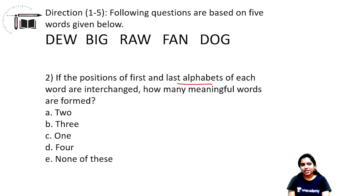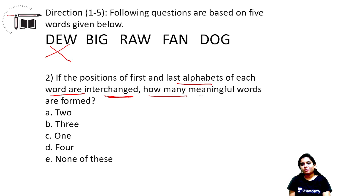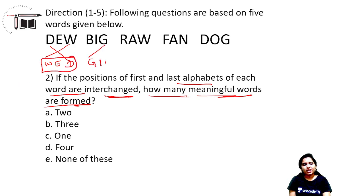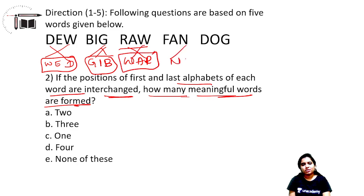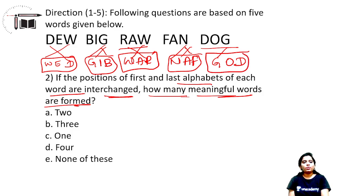Next question: if the positions of the first and last alphabets of each word are interchanged, how many meaningful words are formed? W-E-D-S — is it a meaningful word? G-I-B — no, not meaningful. W-A-R-S — meaningful word W-A-R. N-A-F — not meaningful. Z-O-D — checking... 'WAR' is the second meaningful word and 'GOD' is the third. Total three meaningful words are formed.